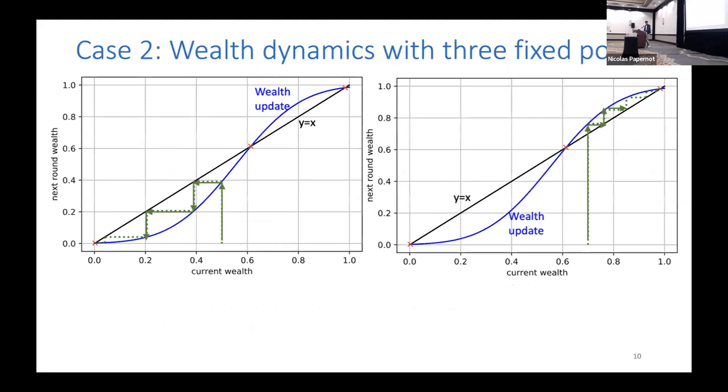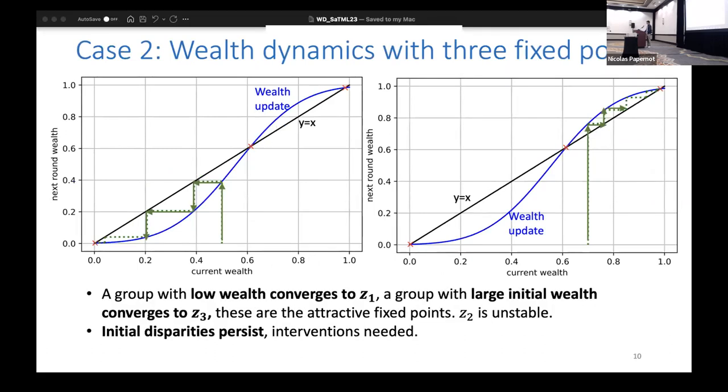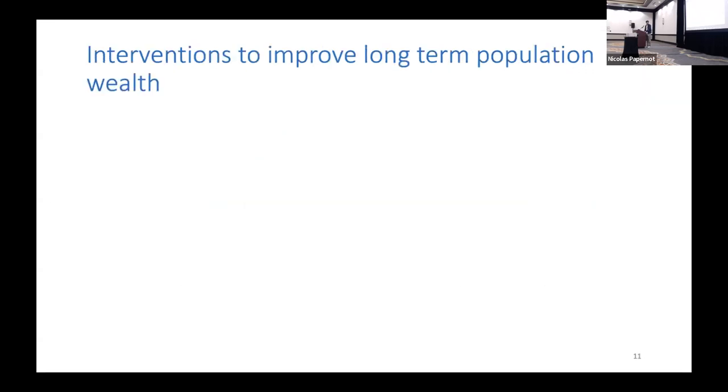Whereas if you have three fixed points, then it matters where your starting population's wealth is. Lower wealth populations, if you follow the trajectory, you end up poor. If you start above the second unstable fixed point, you end up at high wealth. The takeaway here is that you really need interventions to prevent long-term wealth disparity.